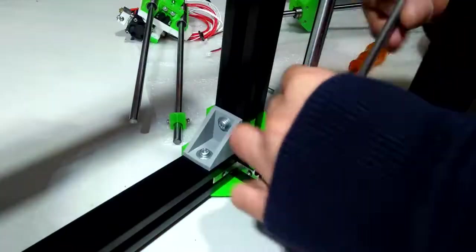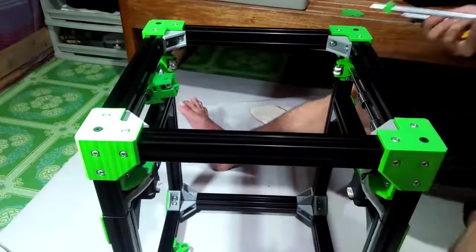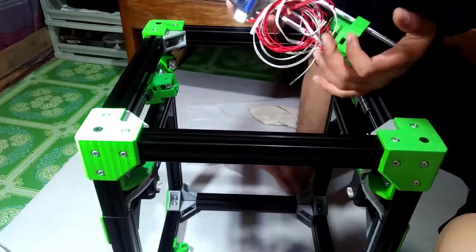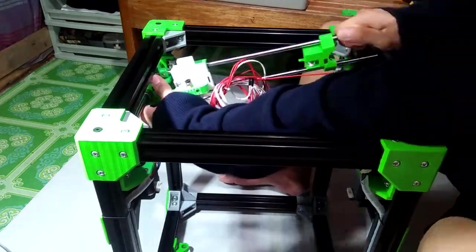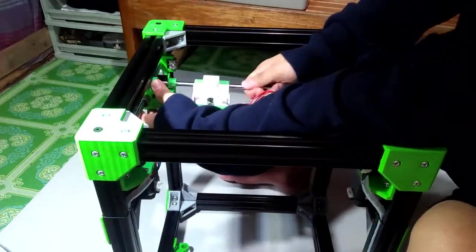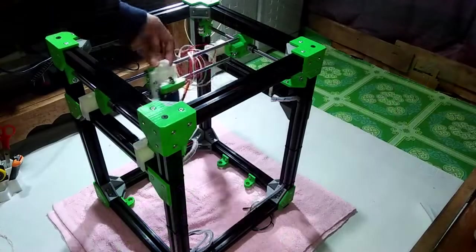I installed first the two Linear Motion Guide Systems for the y-axis of the printer. And after that, I installed the x-axis assembly that will connect the right and left motion system of the y-axis and that will complete the CoreXY Kinematic System of the 3D printer.